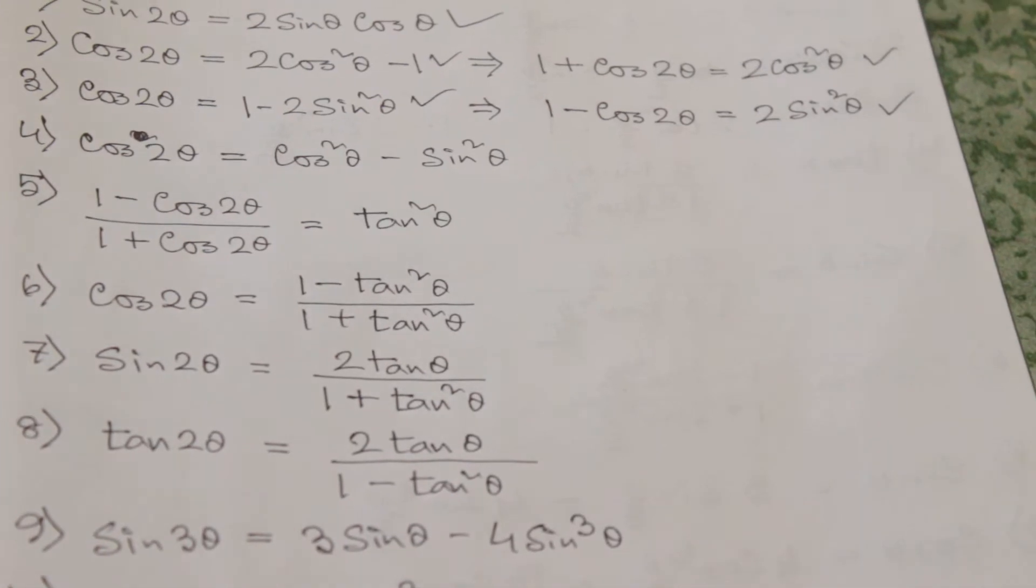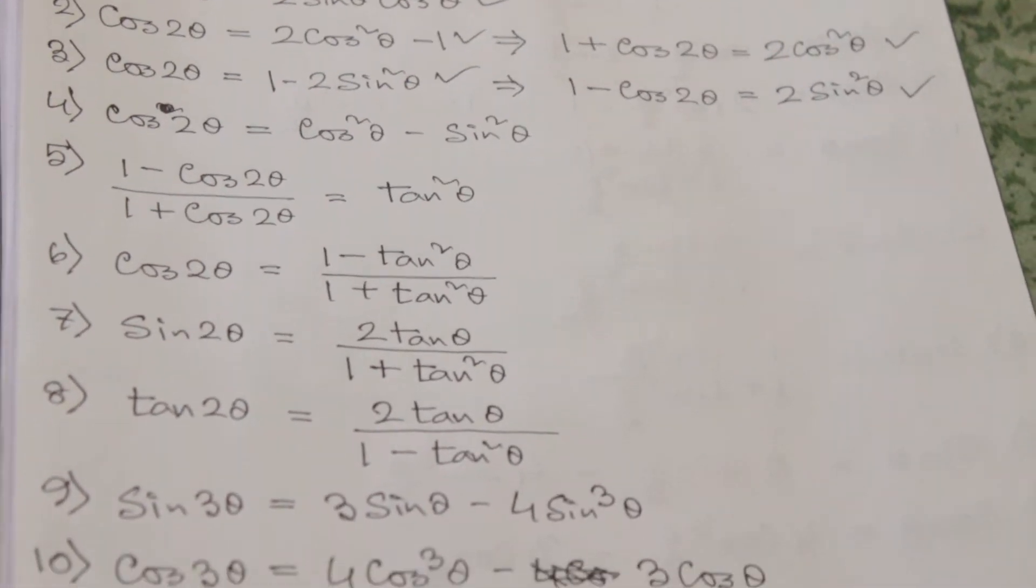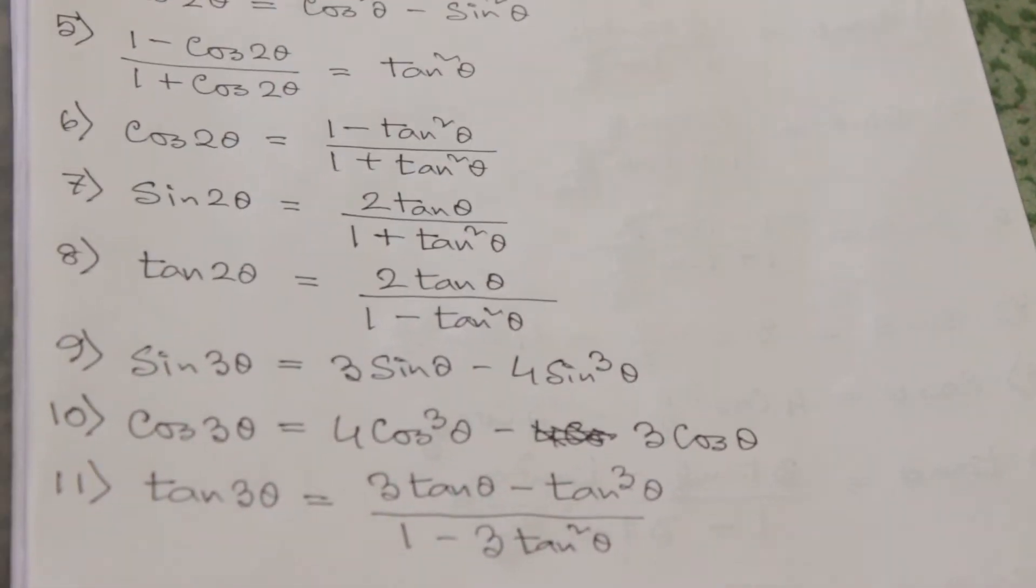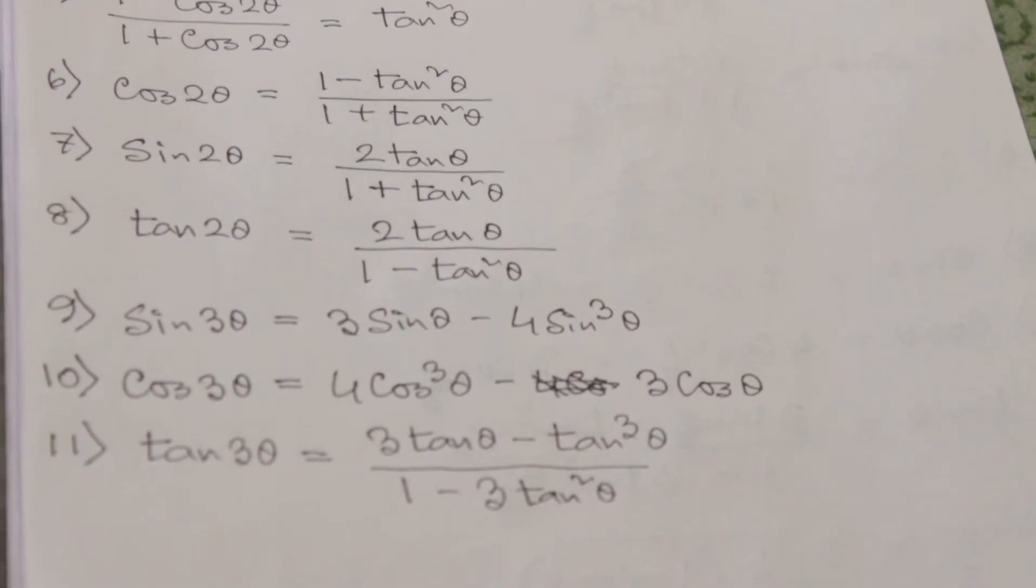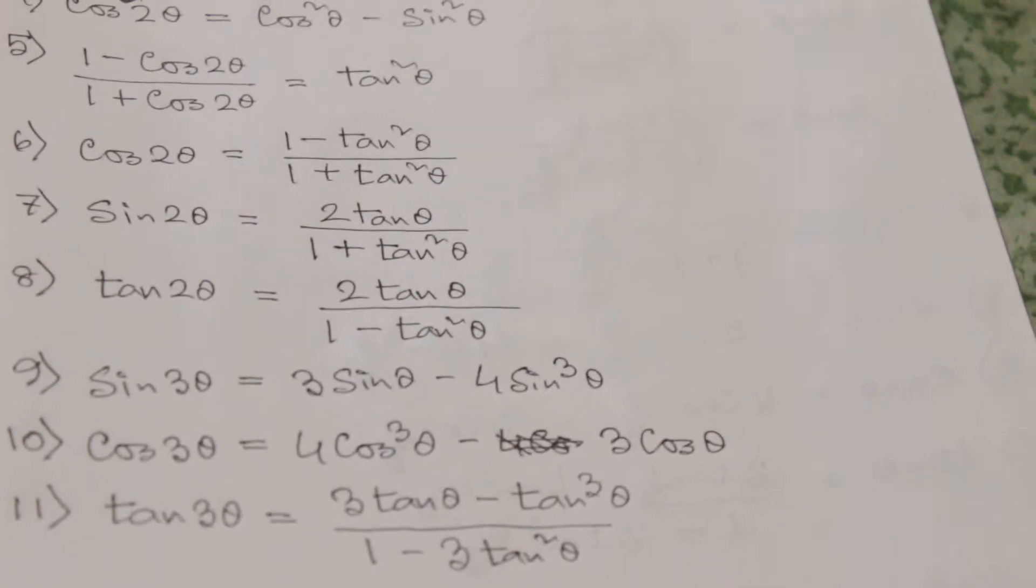Number 4 is cos 2θ equals cos²θ minus sin²θ. Number 5 is (1 minus cos 2θ) divided by (1 plus cos 2θ) equals tan²θ.